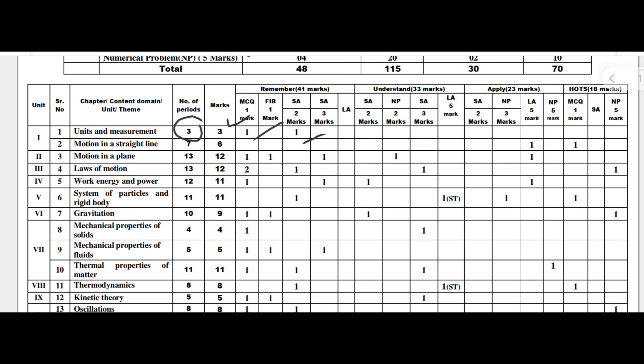Next, Motion in a Straight Line — the second chapter — has seven teaching hours and six marks. This six marks is distributed into long answer and MCQ, totalling six. Motion in a Plane has 13 teaching hours and 12 marks, distributed across MCQ, fill-in-the-blank, short answer three marks, one short numerical, and one long answer.